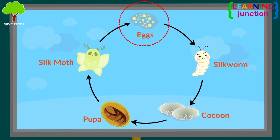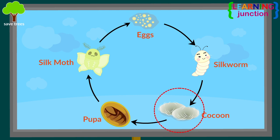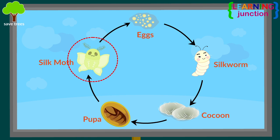First stage is egg. Second is silkworm. Third stage is cocoon. Fourth is pupa. And the final stage is silk moth.